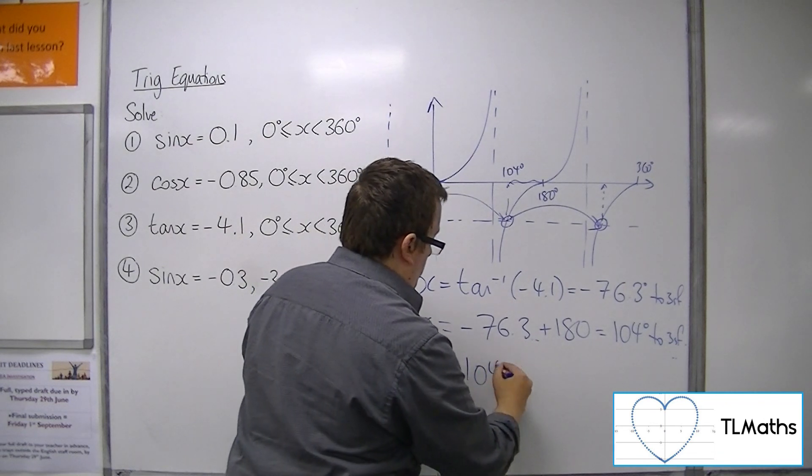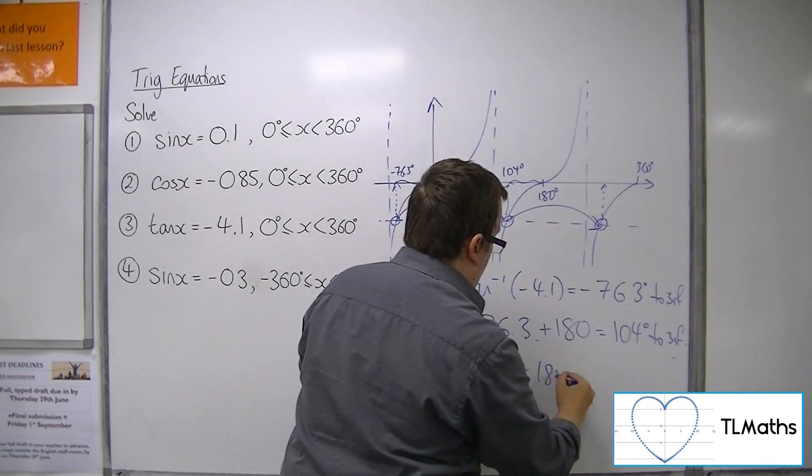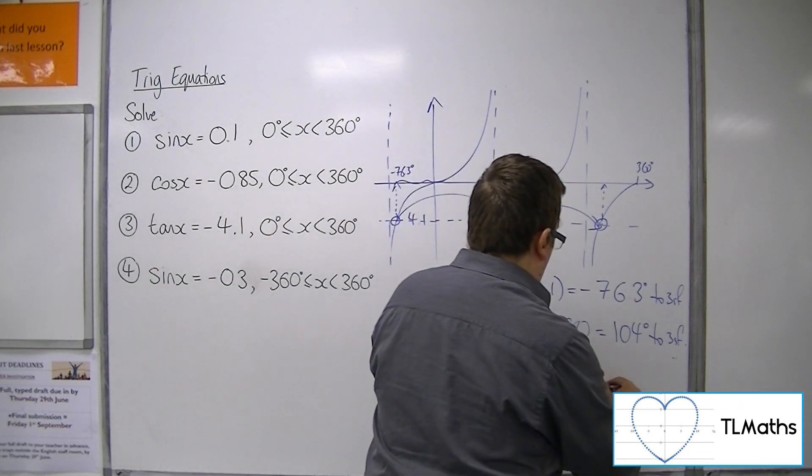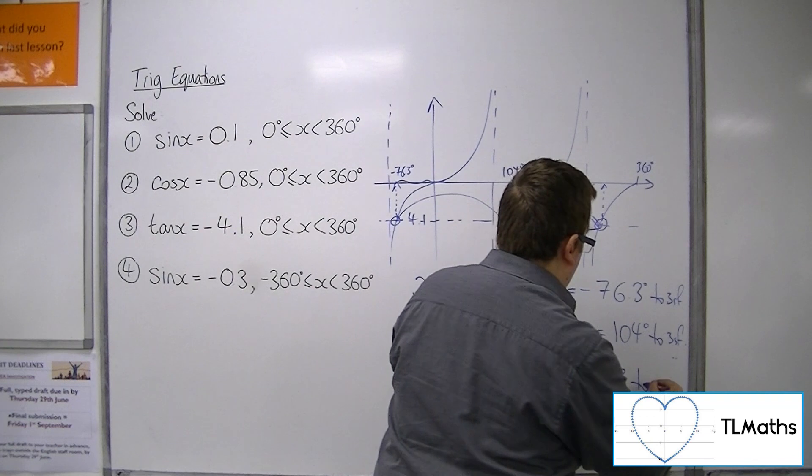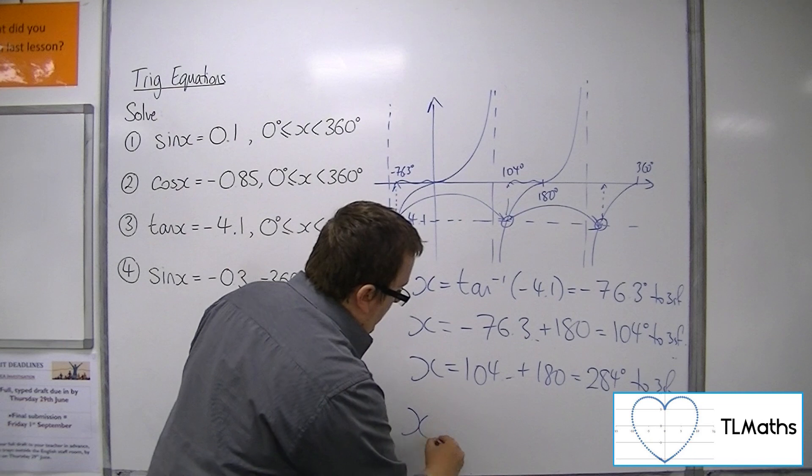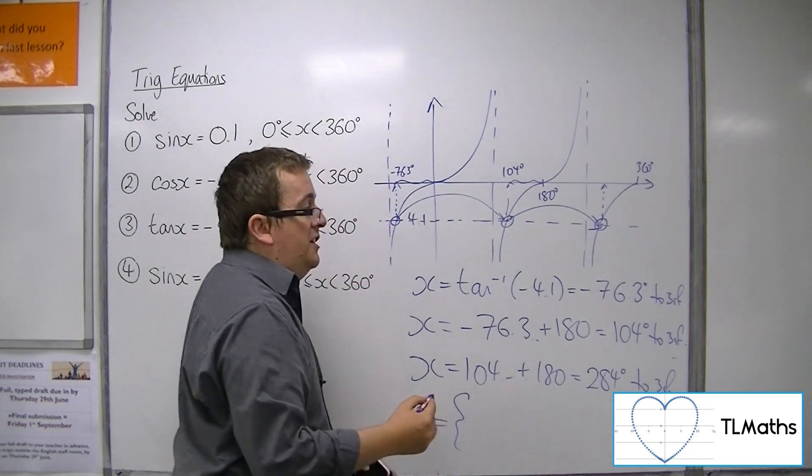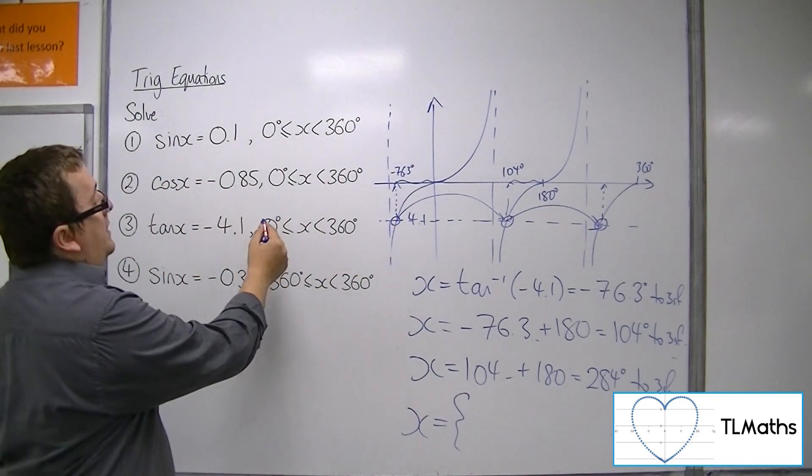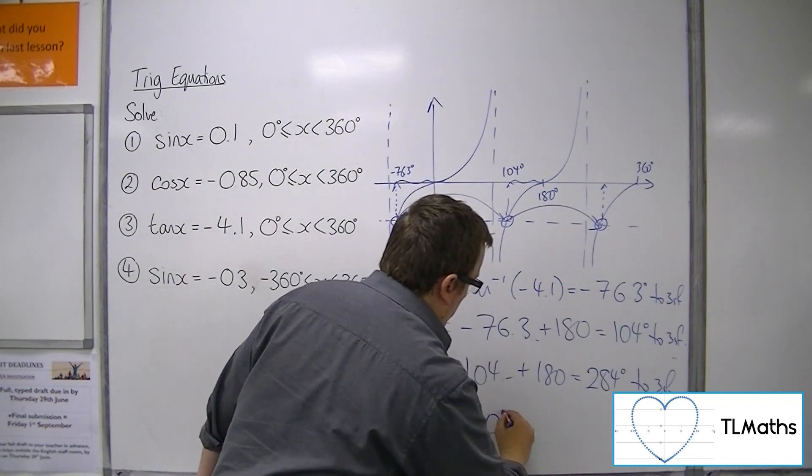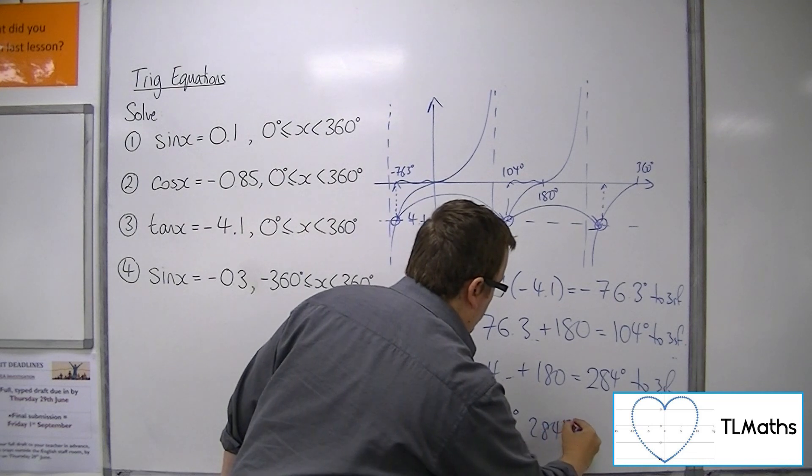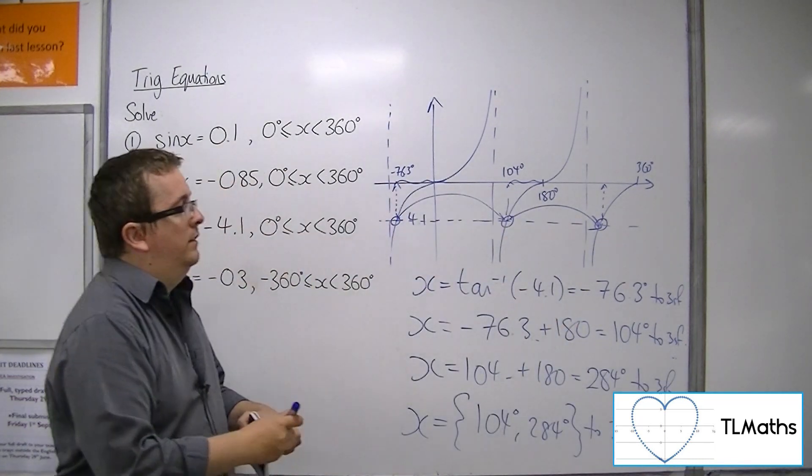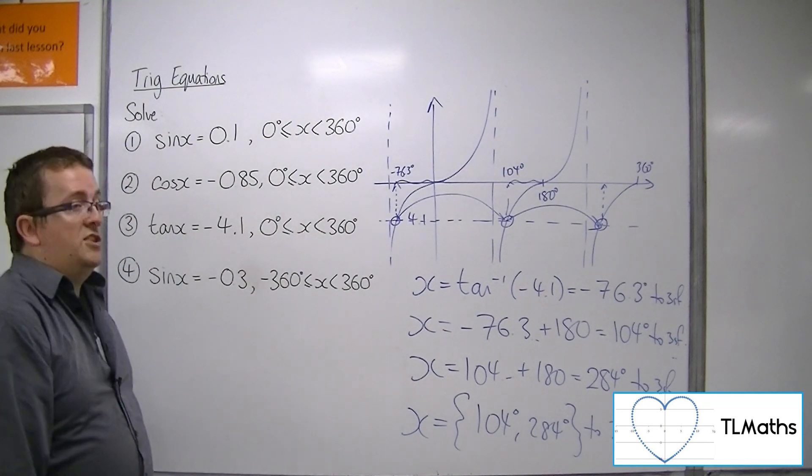So that's the 104 degrees. And then you can add on 180 again to get to the next one. So 104 plus 180 gets us to 284 degrees to 3 sig fig. Now you've got to be careful to make sure that when you're saying which are your solutions, that you pick the ones that are between 0 and 360. So we don't include that one. We're just looking at 104 and 284 to 3 sig fig. And that's how we can solve number 3.